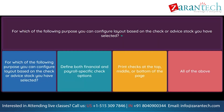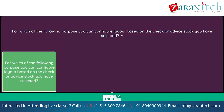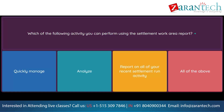Question: For which of the following purposes can you configure layout based on the check or advice stock you have selected? Option 1: configure layout based on the check or advice stock selected. Option 2: define both financial and payroll specific check options. Option 3: print checks at the top, middle, or bottom of the page. Option 4: all of the above. Question: Which of the following activities can you perform using the settlement work area report? Option 1: quickly manage. Option 2: analyze. Option 3: report on all of your recent settlement run activity. Option 4: all of the above.